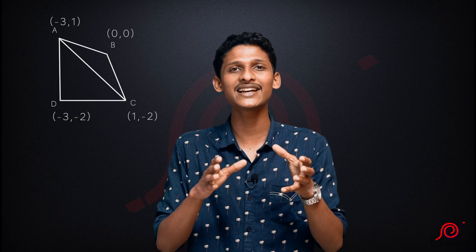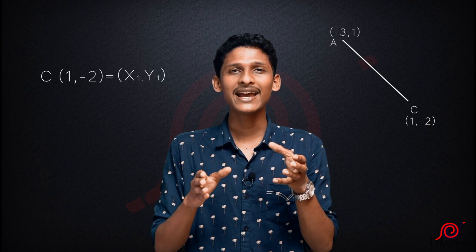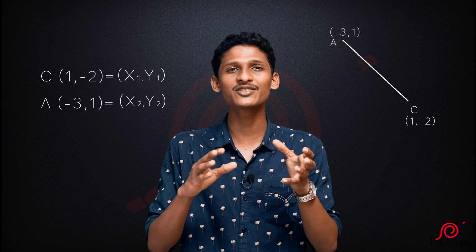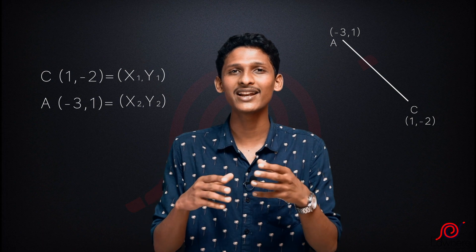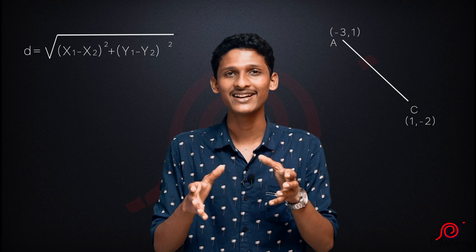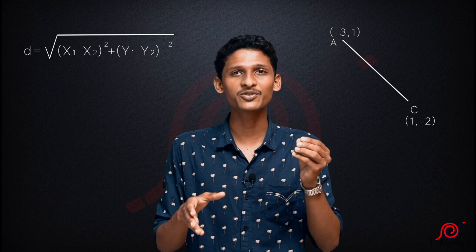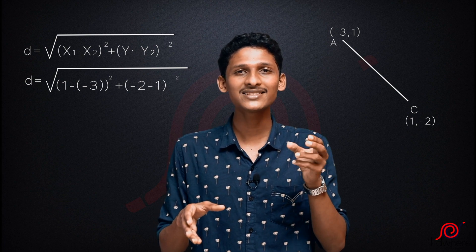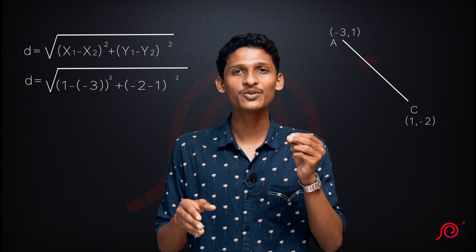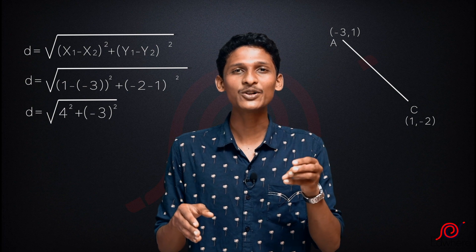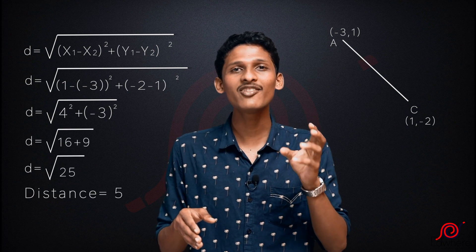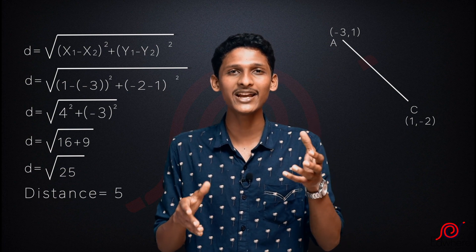Now we find the diagonal AC. Point A is (-3, 1) and point C is (1, -2). These are two general points, so we use: distance = root of ((x1 - x2)² + (y1 - y2)²). Substituting: root of ((1 - (-3))² + (-2 - 1)²) = root of (4² + (-3)²) = root of (16 + 9) = root 25 = 5. The length of diagonal AC is 5.